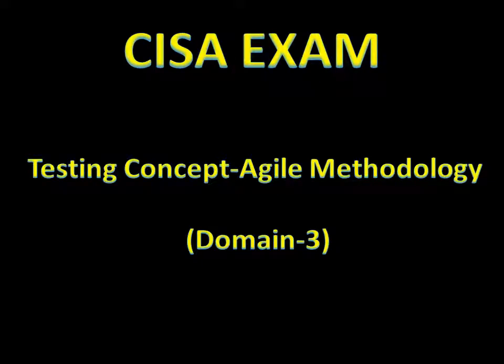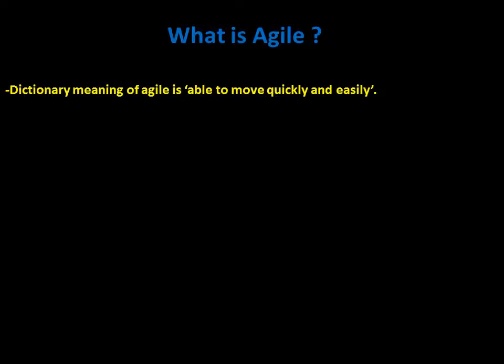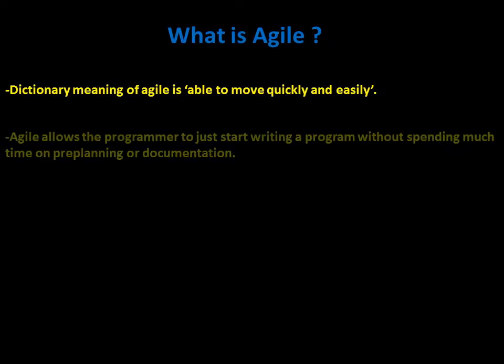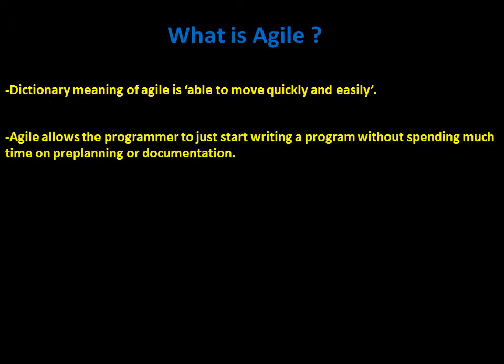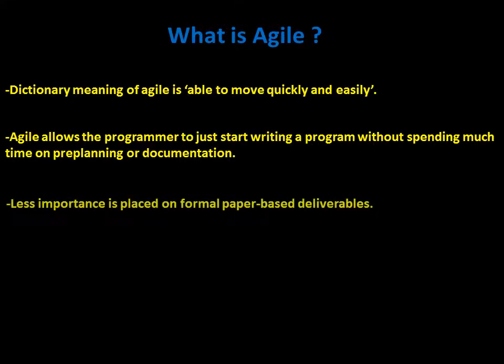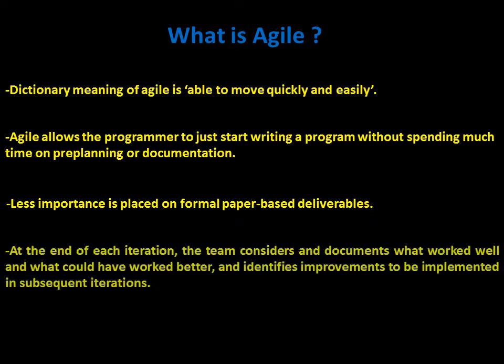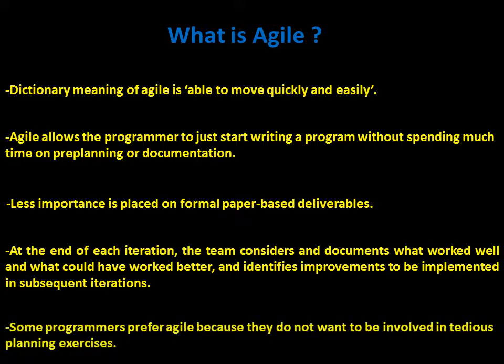This video deals with Agile methodology, Domain 3. What is Agile? Agile means able to move quickly and easily. Agile allows the programmer to just start writing a program without spending much time on pre-planning or documentation, so less importance is placed on formal paper-based deliverables. At the end of each iteration, the team considers and documents what worked well and what could have worked better, and identifies improvements to be implemented in subsequent iterations.